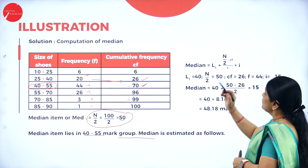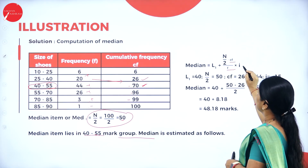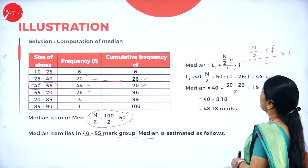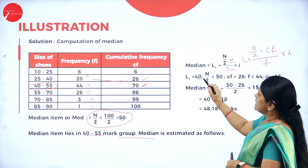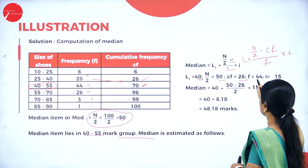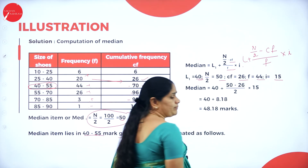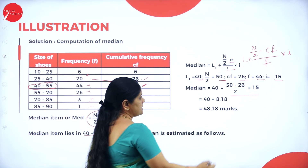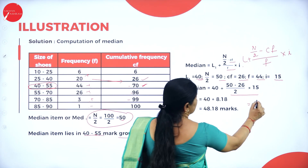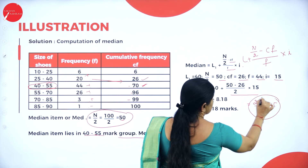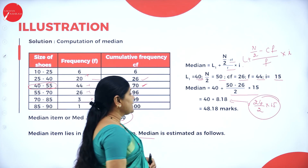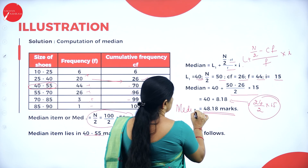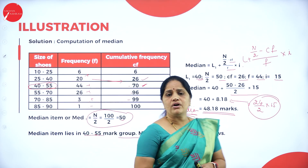Substituting into the formula: Median = L1 + [(N/2 − CF) / F] × I. L1 = 40, N/2 = 50, CF = 26, F = 44, I = 15. So Median = 40 + [(50 − 26) / 44] × 15 = 40 + [24/44] × 15 = 40 + 8.18 = 48.18. The median of the given problem is 48.18, which divides the entire distribution into two equal parts.